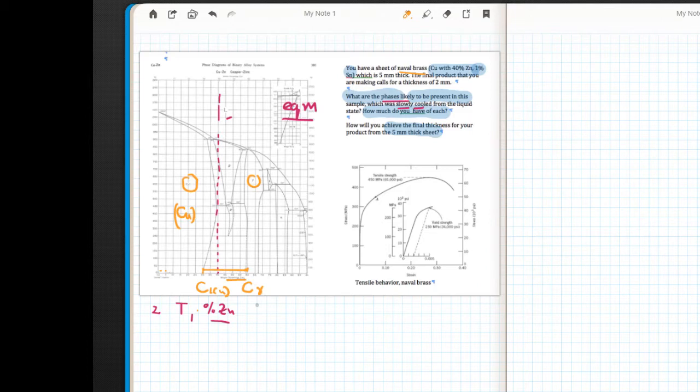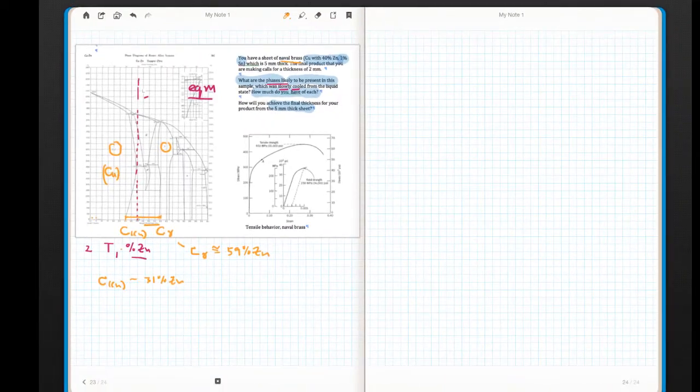That is a solid solution. So if I go directly down here, what I see at this tie line endpoint is the composition of the gamma, what I see down here directly is the composition of the copper. So in terms of weight percent zinc, we know that the composition of the copper, reading directly off the diagram, is about 31% zinc.